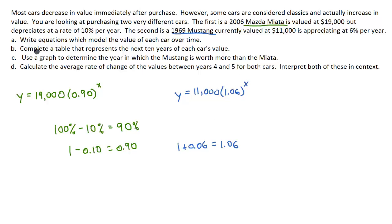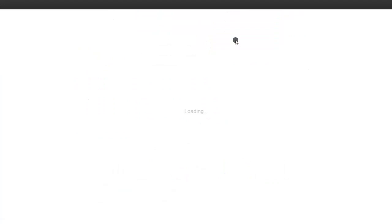Now Part B is telling us to complete a table that represents the next 10 years of each car's value. So what we would have to do is just plug in 1, 2, 3, 4, and so on, up to 10 for our x values, and calculate our y's to get a big long table. But we could also plug this into a graphing utility of some sort. I'm going to do Desmos, and that will give us a table. So here we are in Desmos. I'm going to click start graphing.